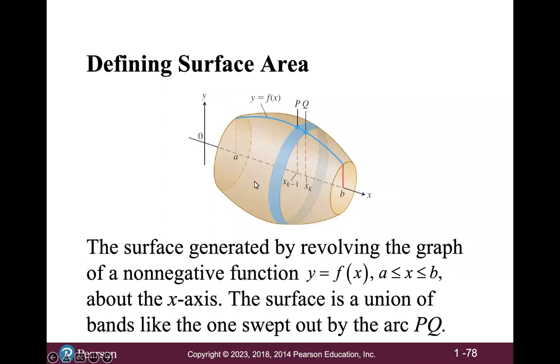The surface generated by revolving the graph of a non-negative function, y equals f of x, for x from a to b, about the x-axis. The surface is a union of bands, like the one swept out by the arc from p to q. So if I was going to do the derivation, I would first get a formula for the surface area of this band. And then I would add them all up and make that into a Riemann sum, which would turn into an integral. So we will skip those details in this section.